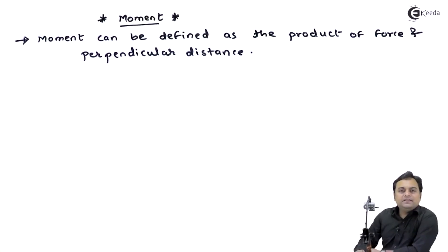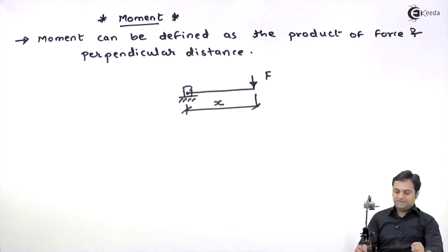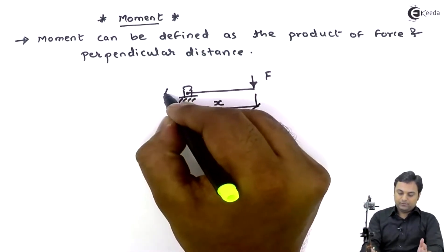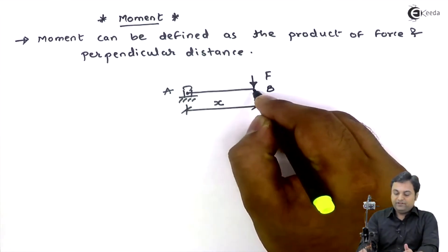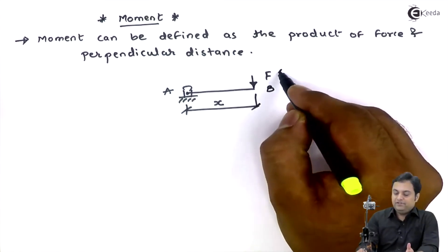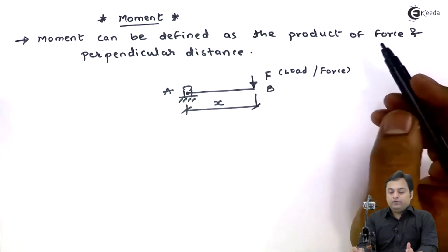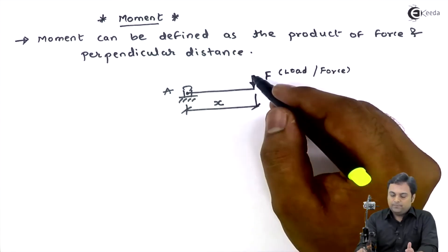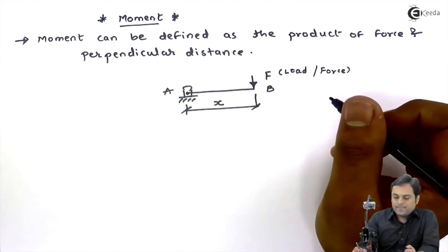Let me explain moment with a diagram. I have drawn a diagram in which we have a lever, or you can say a bar, fixed at one end A and free at the other end B. A load or force denoted by F is applied at end B of the lever whose length is X.